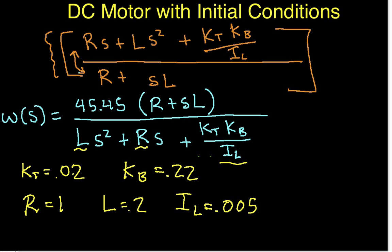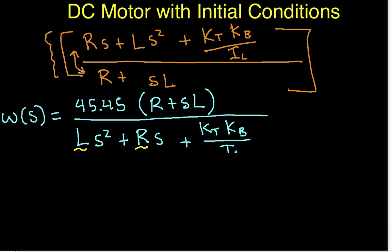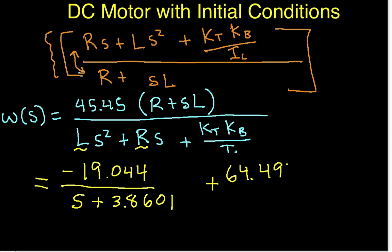And that partial fraction expansion, here we'll tidy up a bit, with the values for the constants that we're using, looks like this. It's equal to minus 19.044 over S plus 3.8601, plus 64.4944 over S plus 1.1399. So, this is what omega S is.